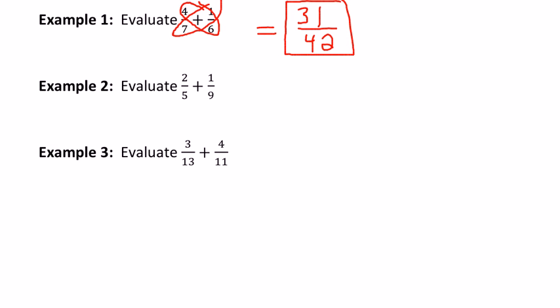The next one, try it on your own real quick. You should be thinking about what the denominator is first, which would be 45. And then the numerator is just two times eighteen plus one times five, which is eighteen, or two times nine, which is eighteen, plus one times five, which is five. Eighteen plus five is twenty-three. And that's your answer.